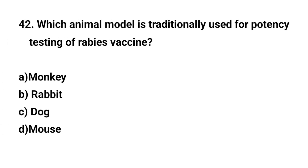Question number 42. Which animal model is traditionally used for potency testing of rabies vaccine? The right answer is D: Mouse.